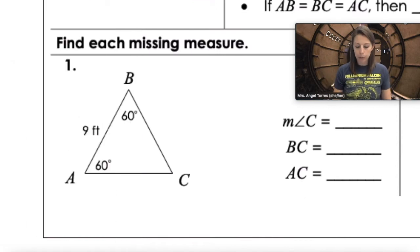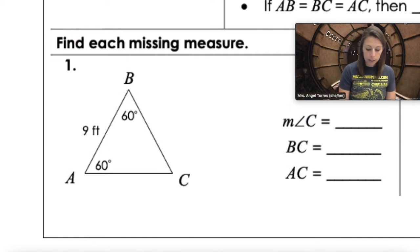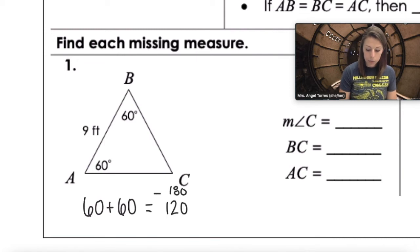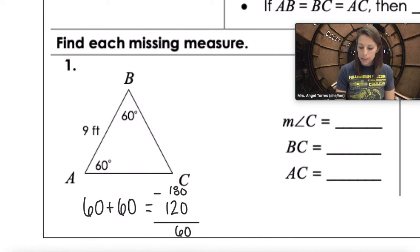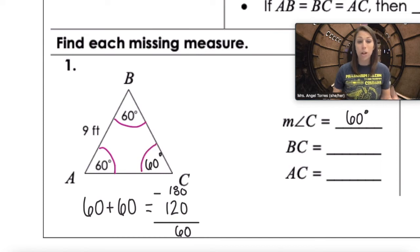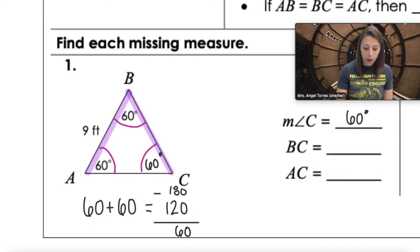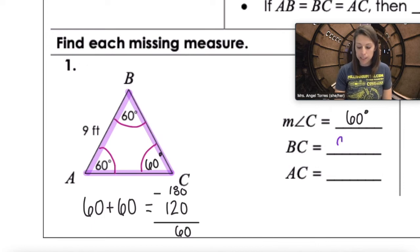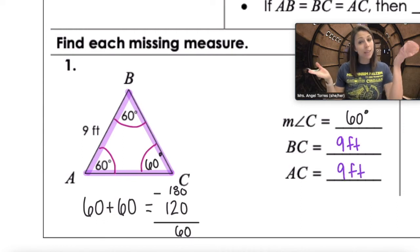In this triangle, we have two angle measures of 60 and 60. Since the three angles add up to 180, and 60 plus 60 is 120, then 180 minus 120 is also 60. So angle C is also 60 degrees — this is an equiangular triangle. If all the angles are equal, all the sides are also equal. So if AB is nine feet, then BC and AC are also nine feet.